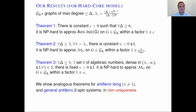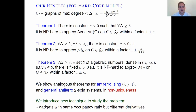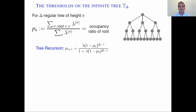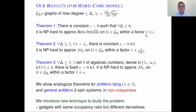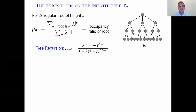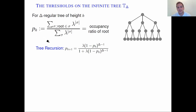Next I'll describe the new techniques needed to obtain these theorems. The main idea is to construct pairs of gadgets that have the same occupancy ratio but different derivatives. To explain what this means, let's look at where the uniqueness threshold comes from — it comes from the delta-regular tree and the uniqueness phase transition in statistical physics. We look at the delta-regular tree of height h and the occupancy ratio of the root, which is the relative weight of independent sets where the root belongs over the weight of all independent sets.